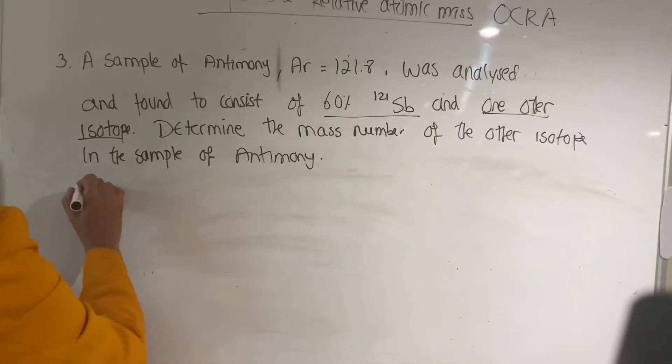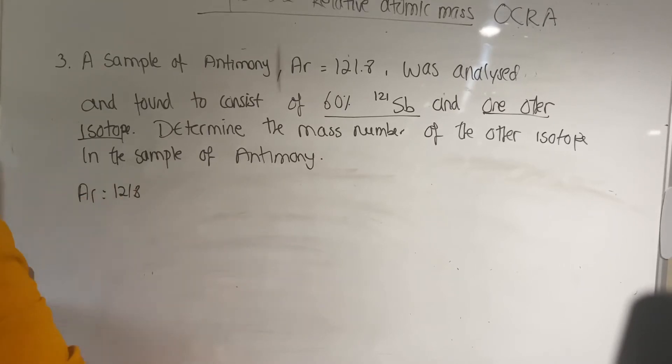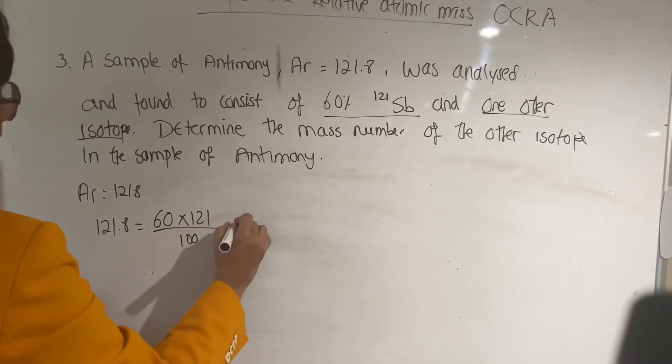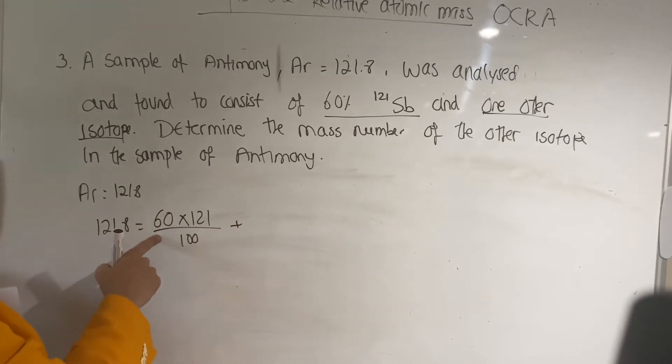What you have to do first of all, you know the Ar is 121.8. So you start by putting 121.8 equals to 60% is the 121, so 121 times 60 divided by 100...